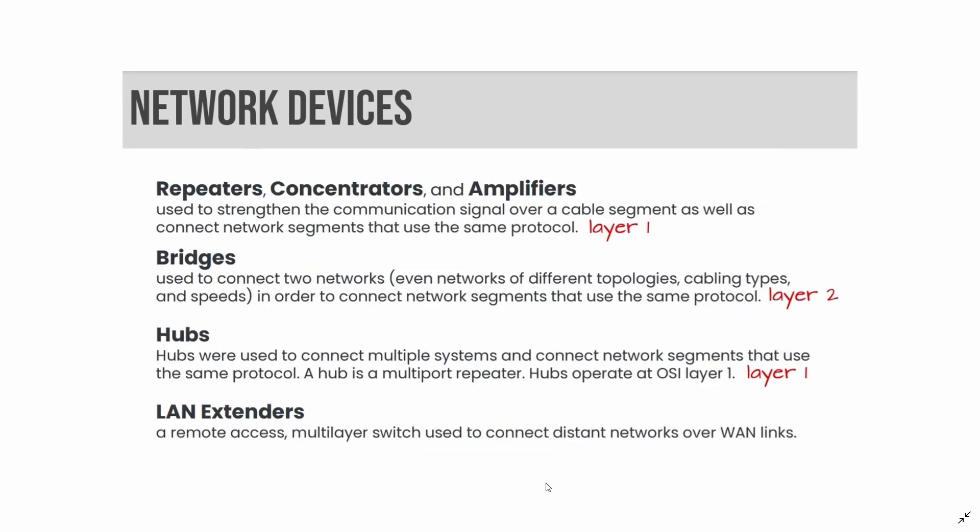Some other common network devices are repeaters, concentrators, amplifiers, bridges, hubs, and LAN extenders. Repeaters, concentrators, and amplifiers are used to strengthen the communication signal over a cable segment and connect network segments that use the same protocol — all at layer 1. Bridges are used to connect two networks, even networks of different topologies, cabling types, and speeds, operating at layer 2. Hubs connect multiple systems and are multi-port repeaters, operating at OSI layer 1.